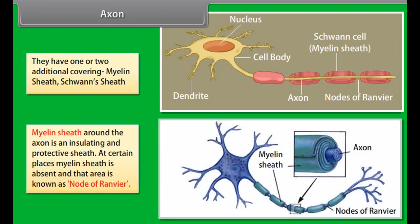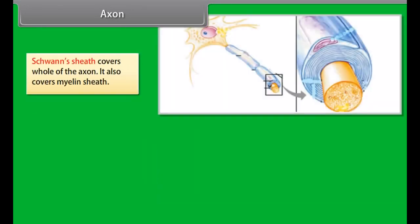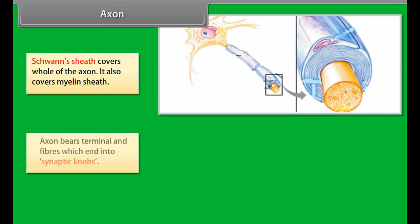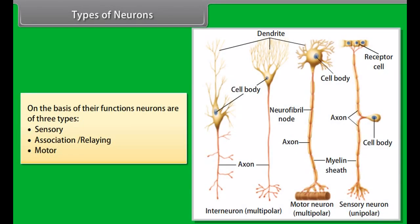Dendrites are small-sized branched fibers, many in number. They conduct stimuli towards the cell body, and are hence called afferent in nature. The axon is the largest fiber in the cell. Axons are long-sized, unbranched, and only one in number. They conduct stimuli from the cell body towards other neurons, and are hence called efferent in nature.